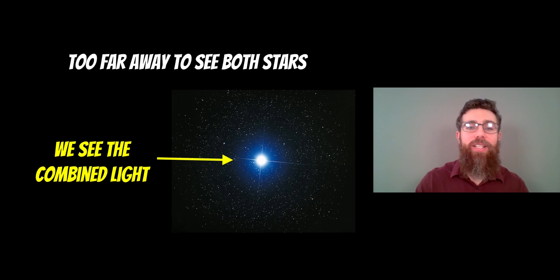Now, we can't actually resolve both stars normally. So when we look at a star, we would see the combined light of both of these stars in the binary system. We would see just a single star and we wouldn't necessarily resolve or see two individual stars.